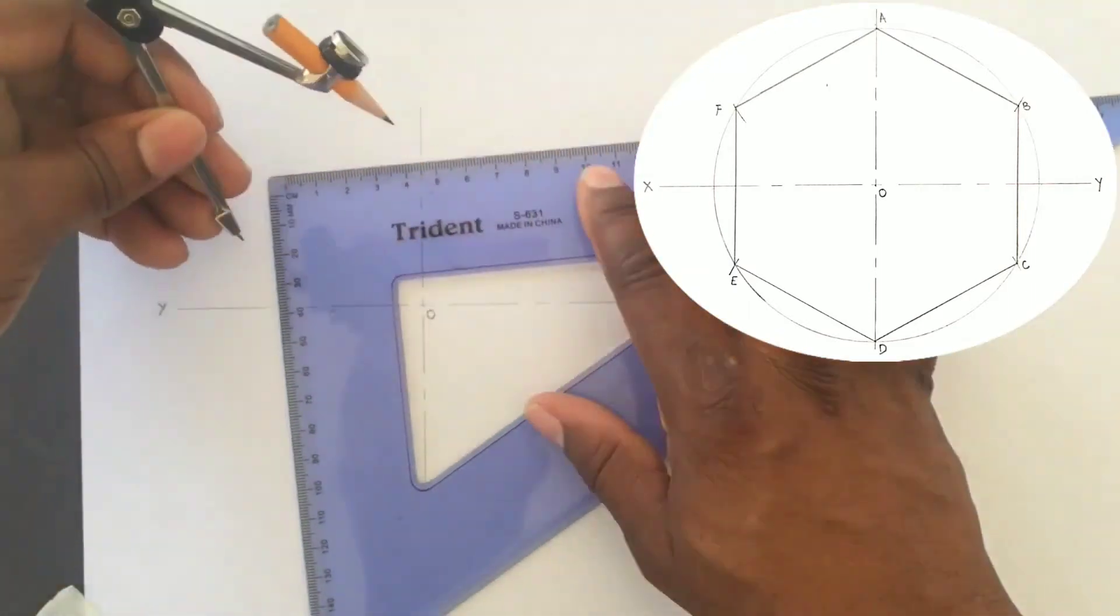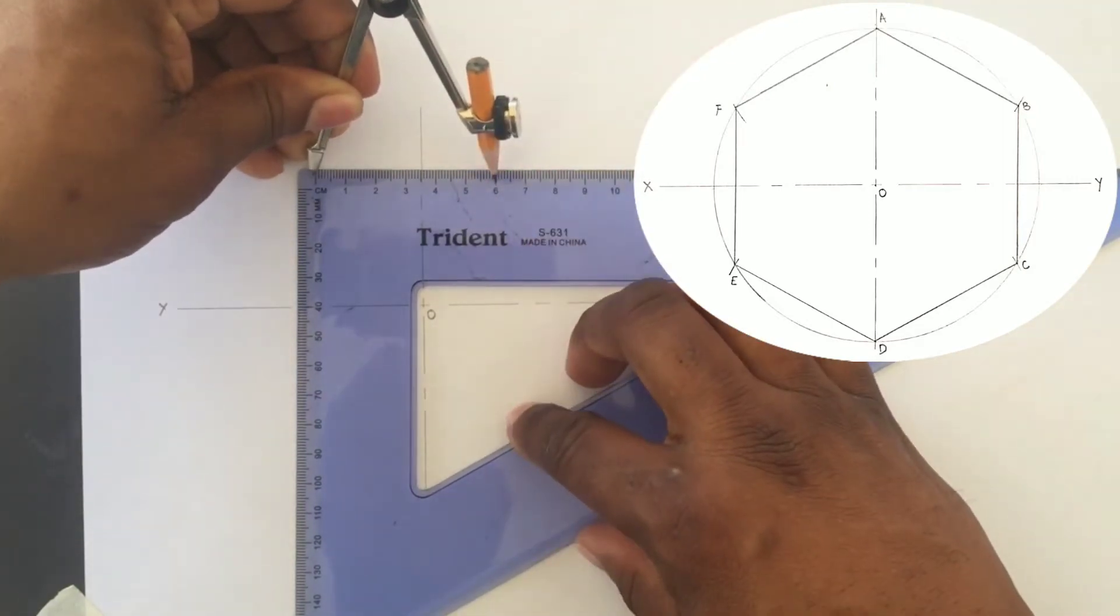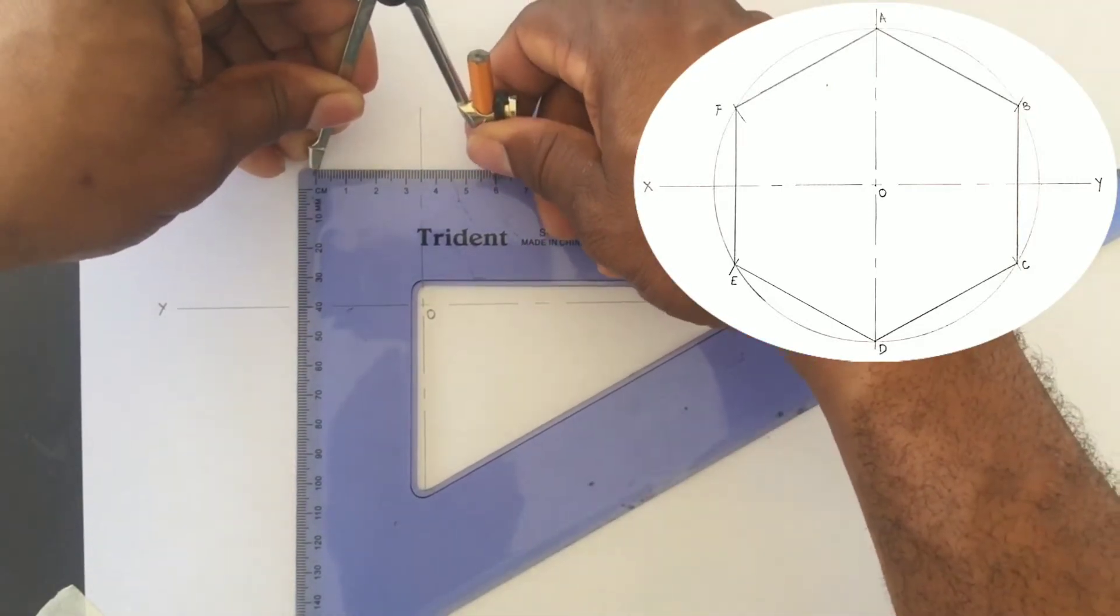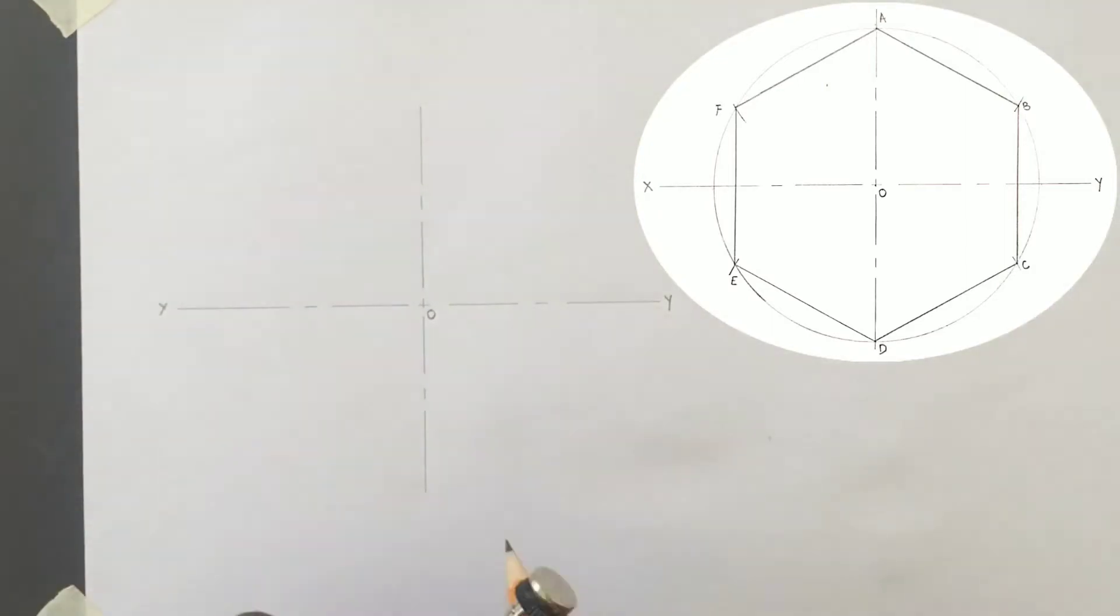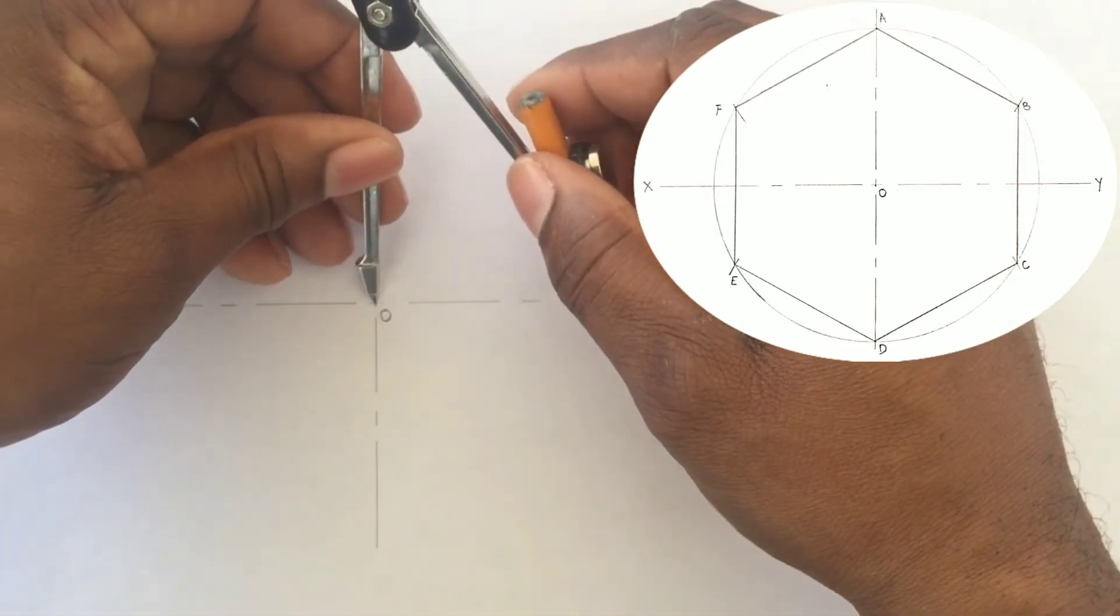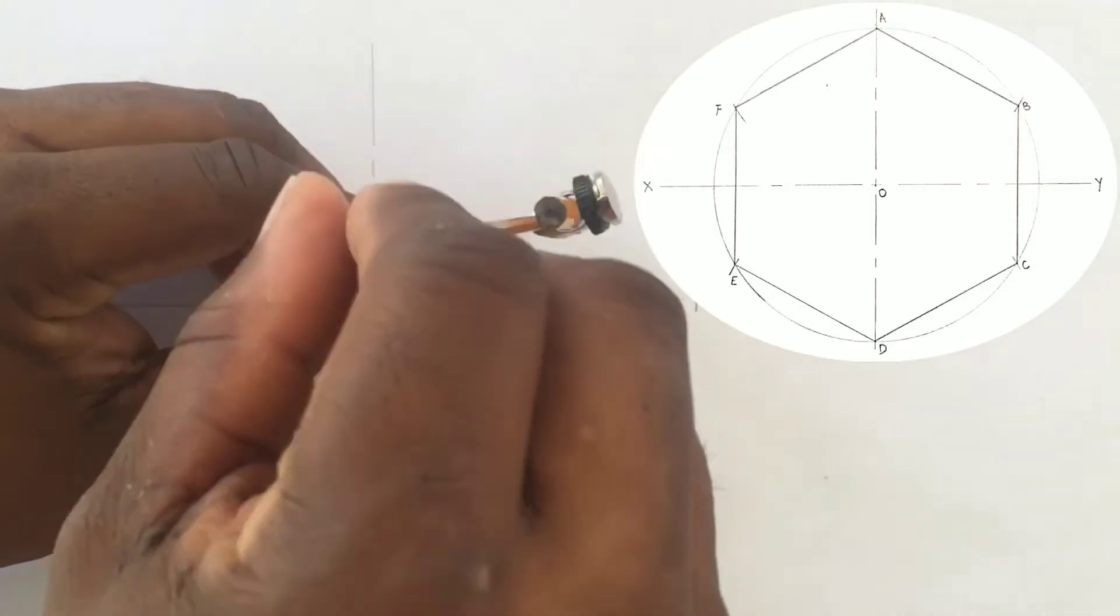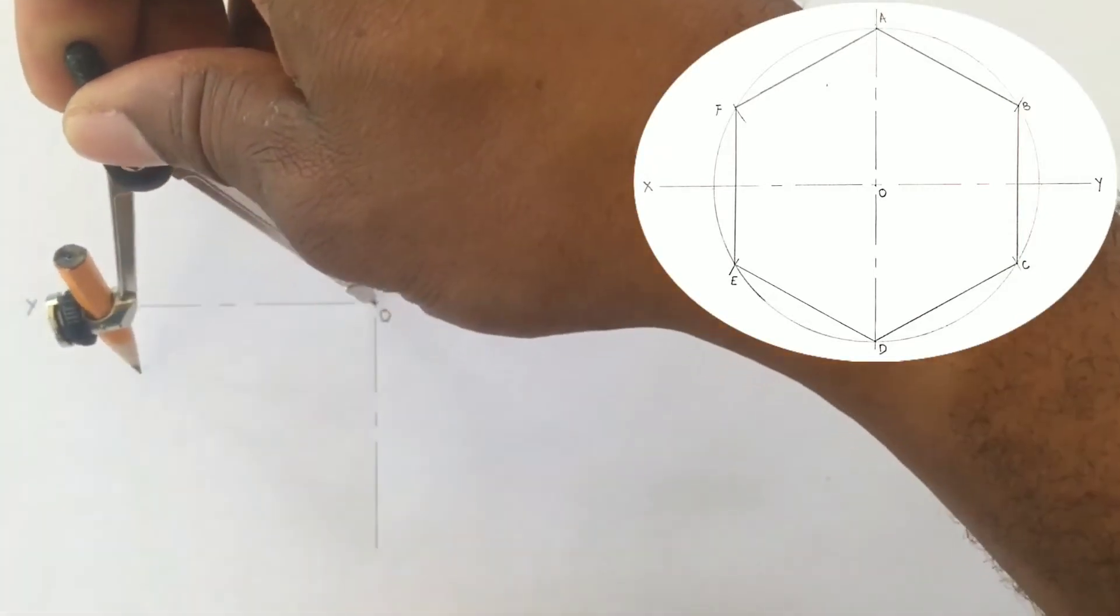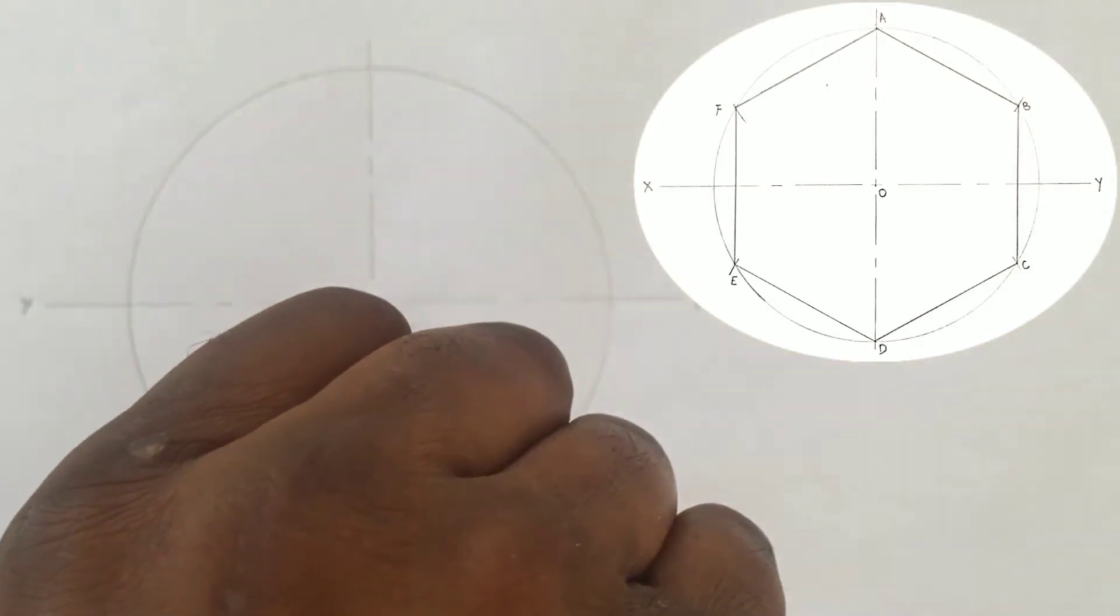Next we will open our compass to 60 millimeters or 6 centimeters. From the center O we will draw a circle. This circle is drawn at a radius of 6 centimeters or 60 millimeters.